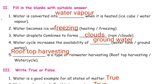Roman numeral 2, fill in the blanks with suitable answer. First one: water is converted into dash when it is heated. Answer: water vapor. Second one: water becomes ice on dash. Answer: freezing.